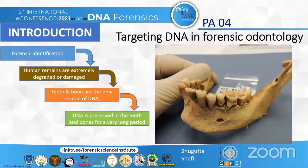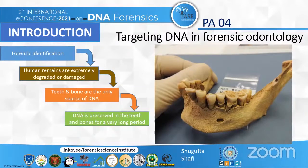Introduction. In forensic identification cases where human remains are extremely damaged and degraded, teeth and bones are often the only available sources of DNA. Advances in DNA extraction techniques and short tandem repeat DNA typing have greatly increased our potential to identify human remains previously considered compromised for genetic analysis.